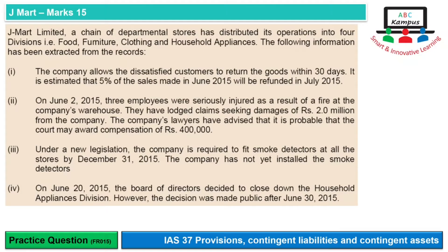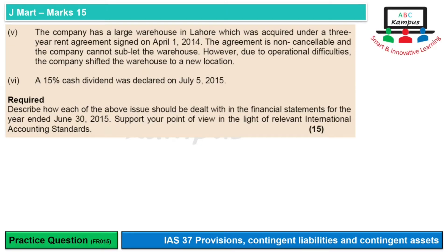J-Mart Limited, a chain of departmental stores, has distributed its operations into 4 divisions: Food, Furniture, Clothing, and Household Appliances. The following information has been extracted from the records, aur iske baad hume 4 situations di gayi hain, plus 2 more situations. Requirement yaha hai ki describe how each of the above issues should be dealt with in the financial statements for the year ended June 30, 2015, in the light of relevant international accounting standards, for 15 marks. Hum isme se her issue ko one by one separately discuss karenge.